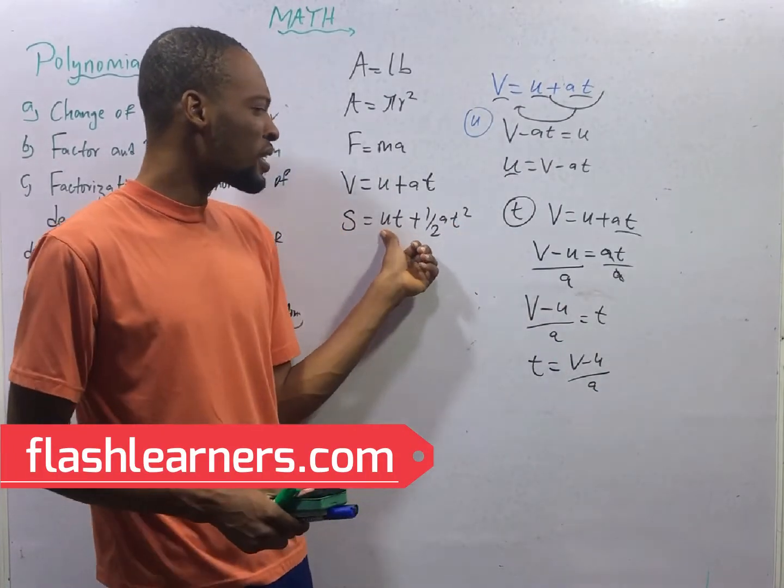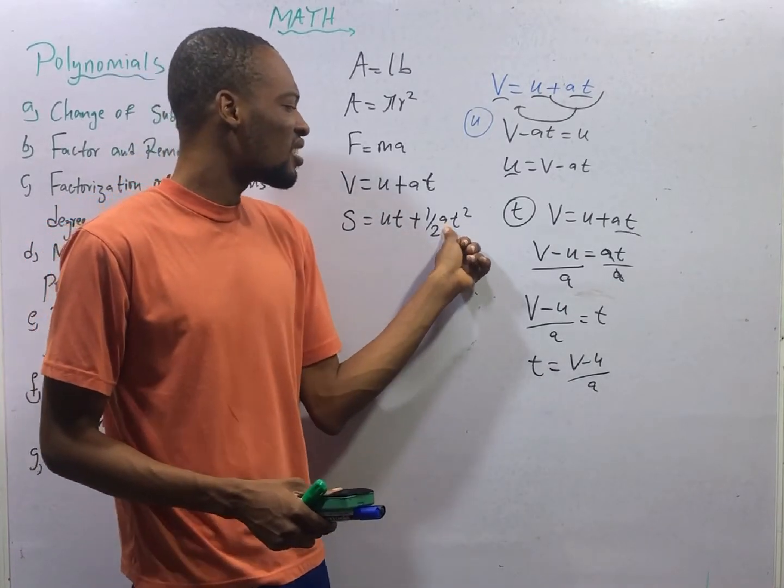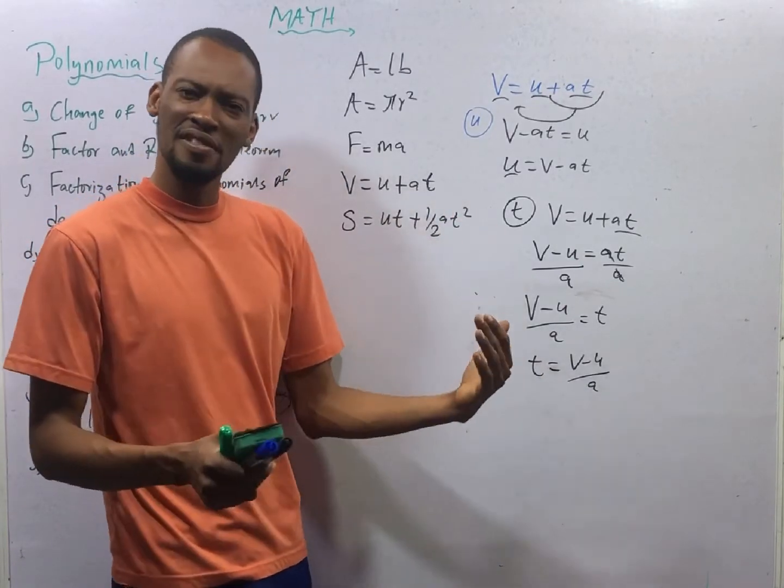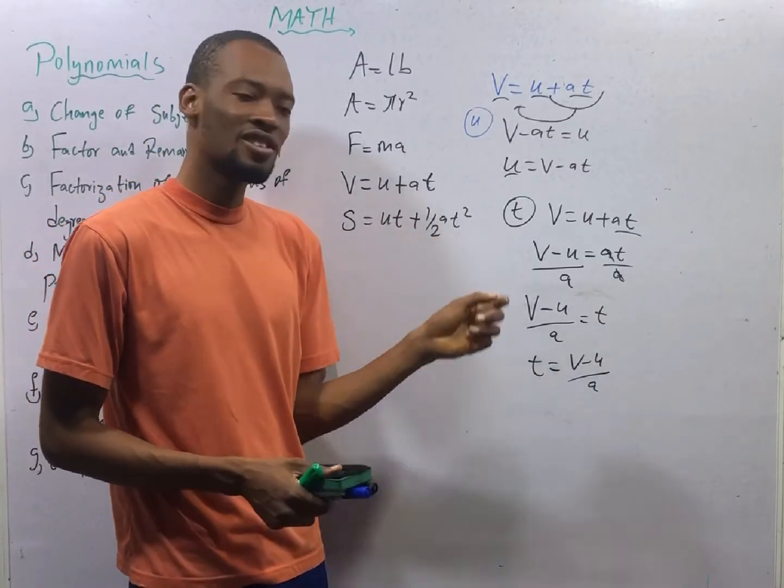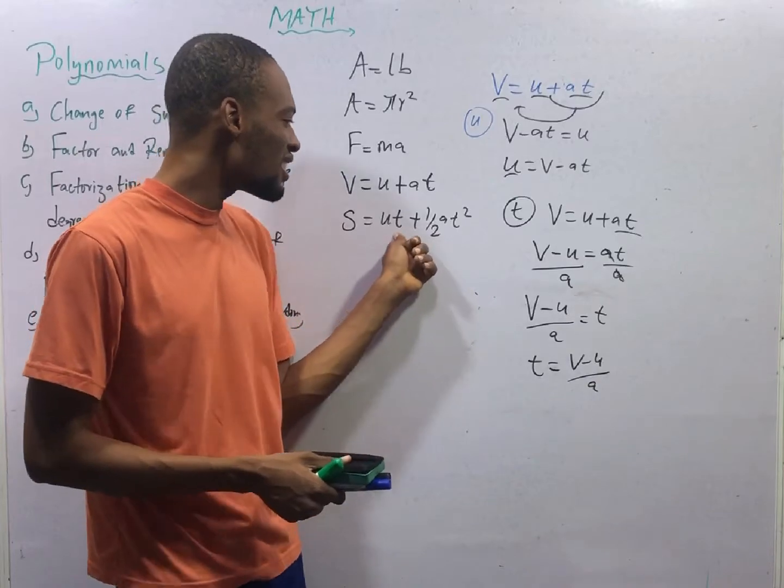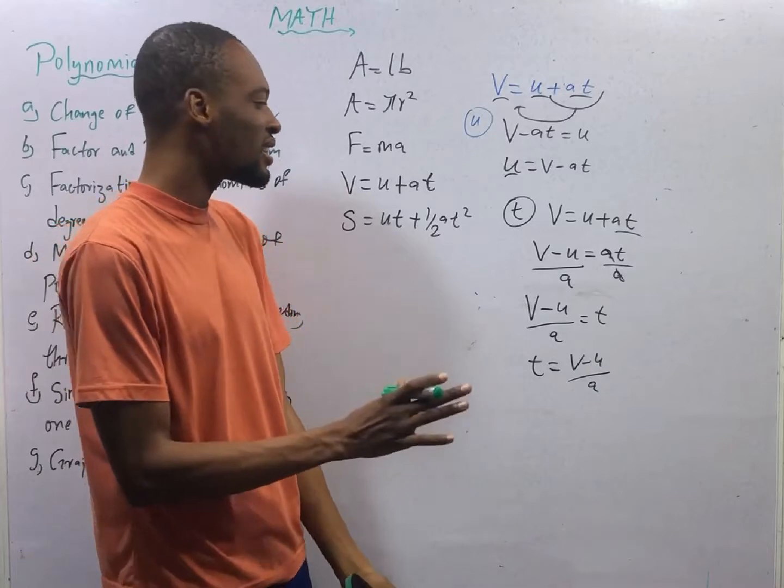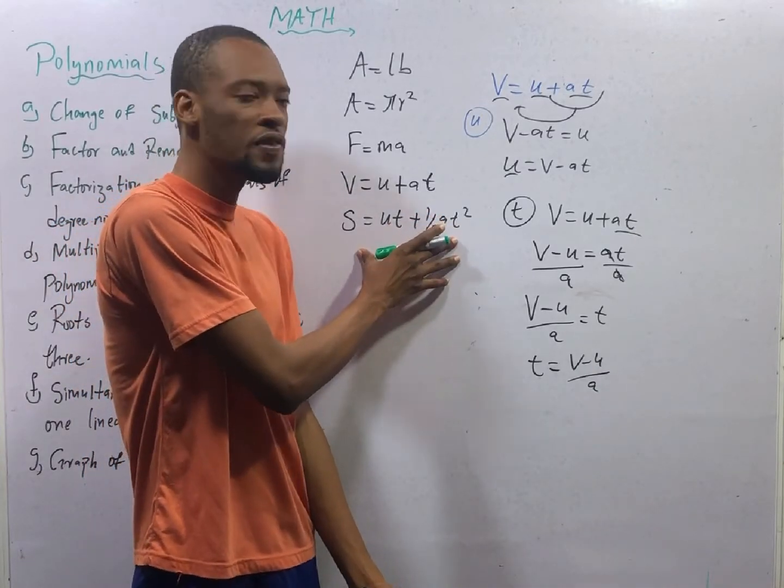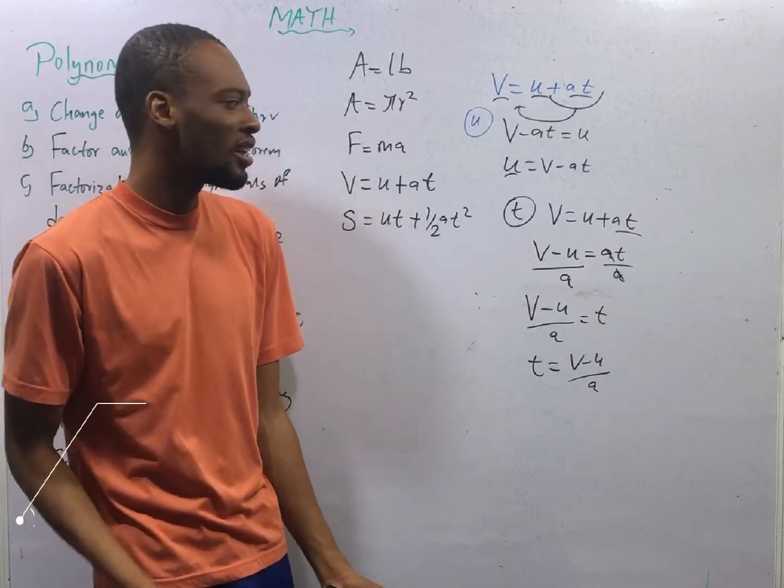You will see that S equals U plus half AT squared. Making U subject formula here is very easy. Making A subject formula here is very easy. But a situation where you are making T subject formula, you have one T here and you have T squared. That is where the problem comes. And this is one of the most difficult questions you will get under change of subject formula.